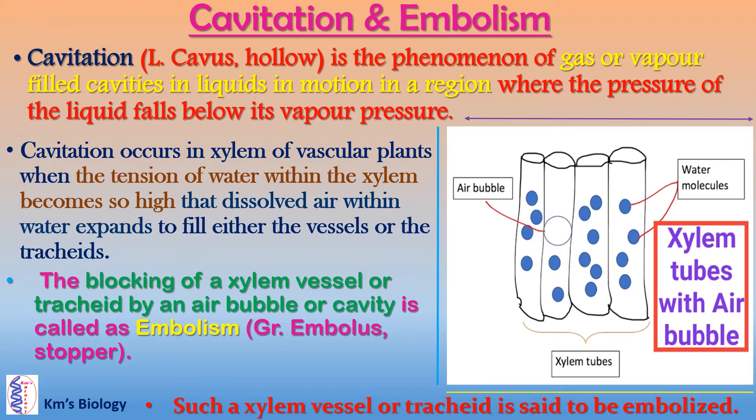The blocking of a xylem vessel or tracheid by an air bubble or cavity is called embolism. The term embolism was originated from a Greek word 'embolas' which means stopper. Such a xylem vessel or tracheid is said to be embolized. Here is a diagram that shows xylem tubes with air bubbles that block water transport in the upward direction.